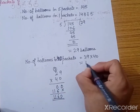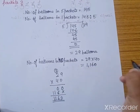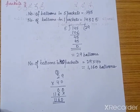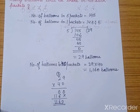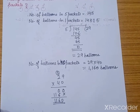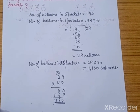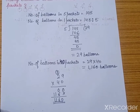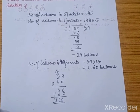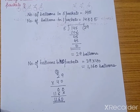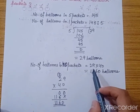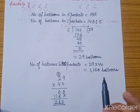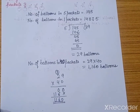So the number of balloons in 40 packets is 1,160 balloons. To summarize: in 5 packets there are 145 balloons; using division we found 29 balloons in 1 packet; and then multiplying 29 by 40 we get the required answer of 1,160 balloons. This is how you will do the Unitary Method.